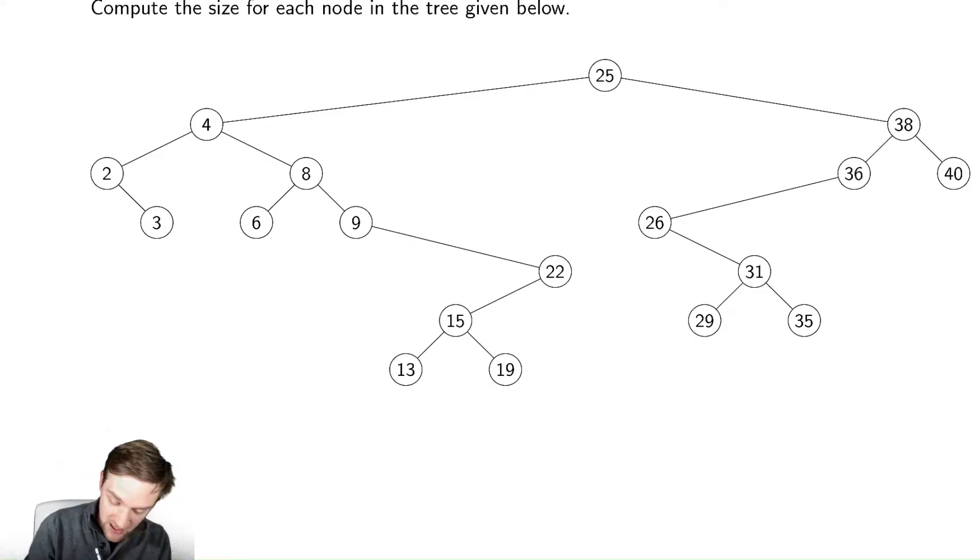Suppose I started my computation at all the leaf nodes. Those sizes are easy. The size of the tree rooted at 3 is 1, and the same for 6, and the same for 13, and 19, and 29, and 35, and 40, because there are no nodes below those.